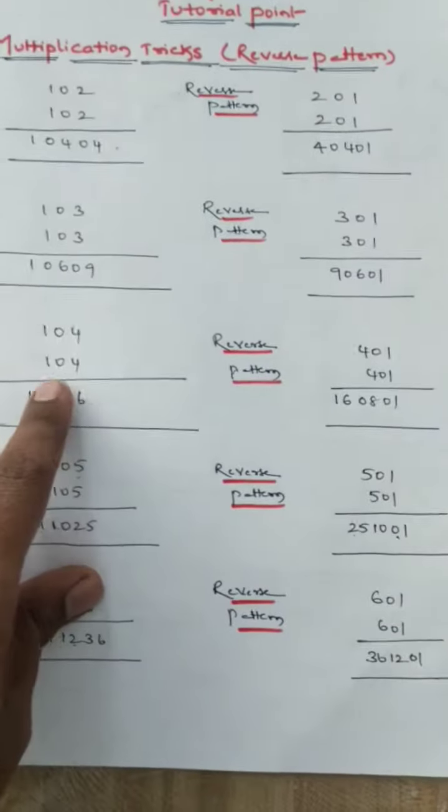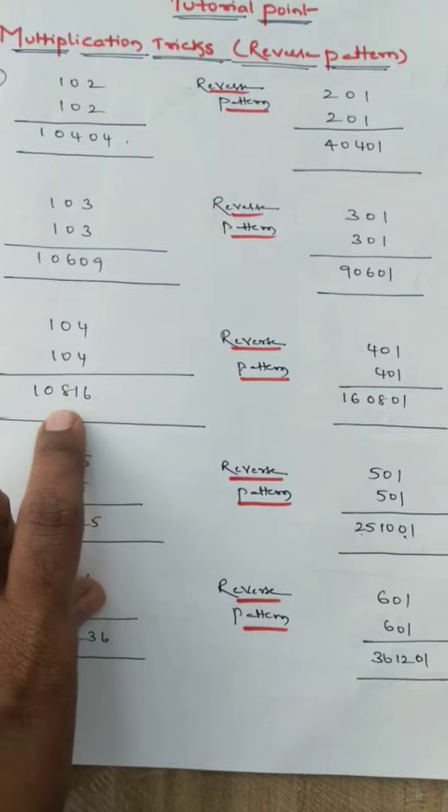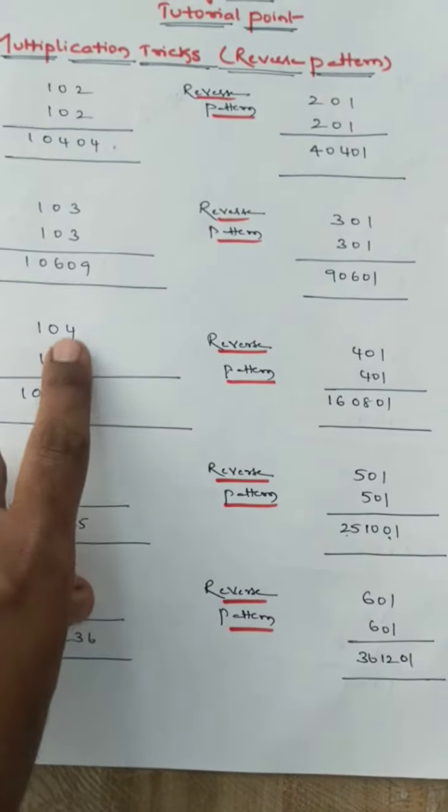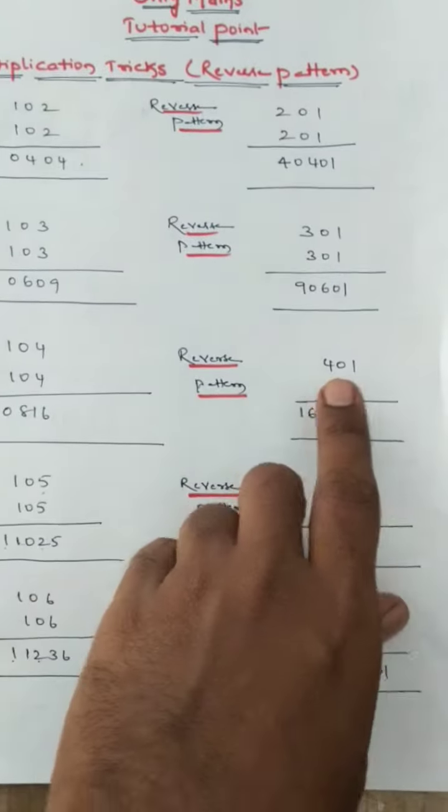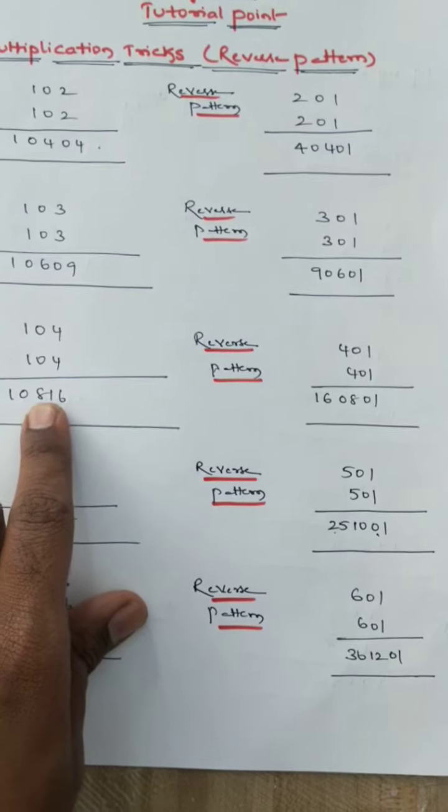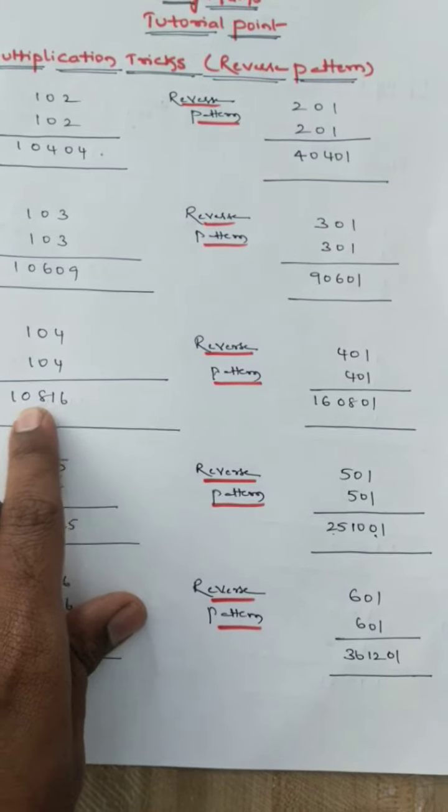104 into 104, you will get this 10 as it is, 4 plus 4 is 8, 4 into 4 is 16. If you write in reverse way, 401 to 401, 16, 0, 8. This last here 1 we have to keep one more 0 and 0, 1.